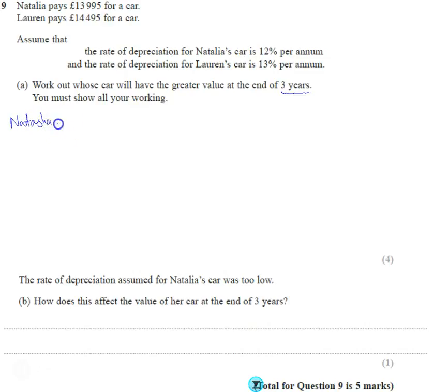We're going to take the price of her car, £13,995, and then we're going to times it by the depreciation. It's going down by 12 percent, which means it's worth 88 percent of what it was at the beginning of the year. The same thing for Lauren's, except hers would be 87 percent. It would be worth less because it loses more per year.